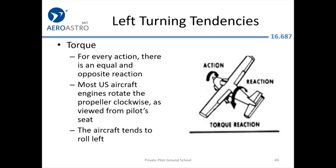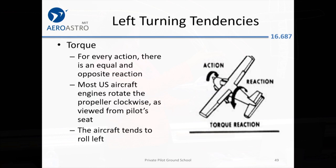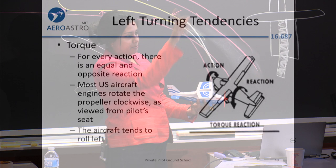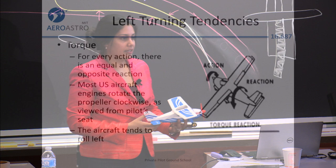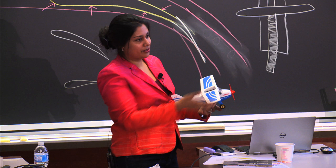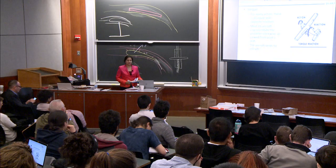The first left-turning tendency is torque. When you're in the airplane looking forward at your propeller, most US engines have the propeller rotating clockwise. Because of Newton's third law — for every action there's an equal and opposite reaction — because the propeller is turning to the right, the whole airplane is trying to roll to the left. That is the first left-turning tendency.